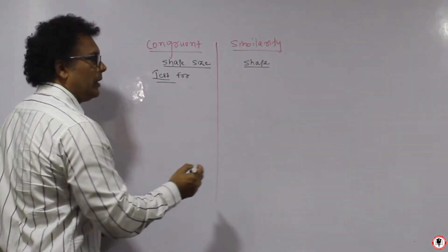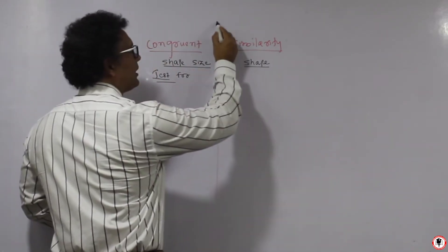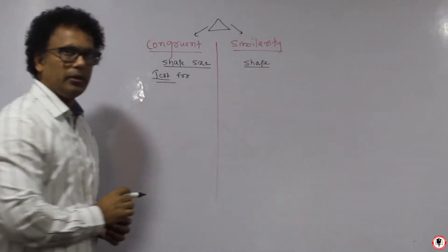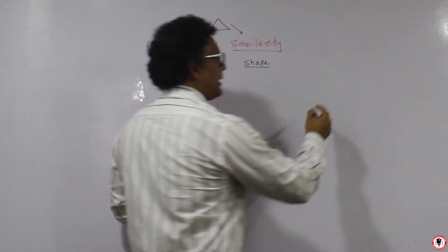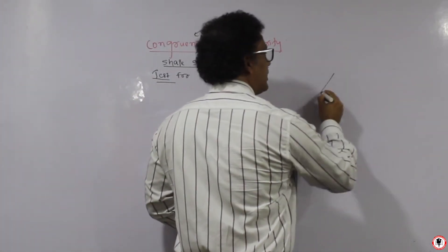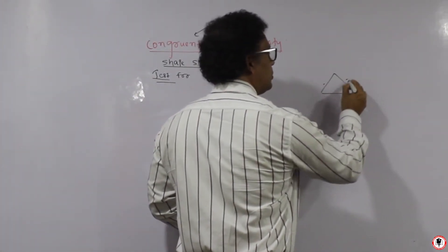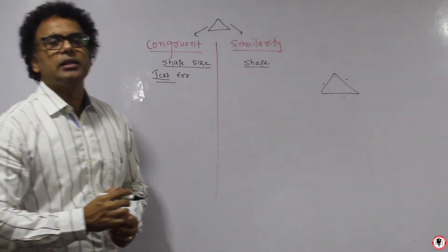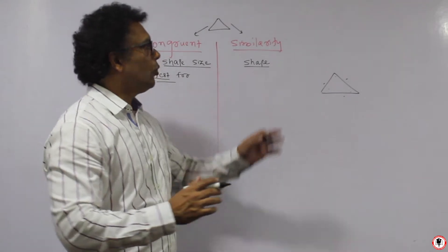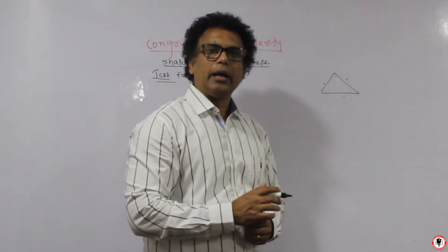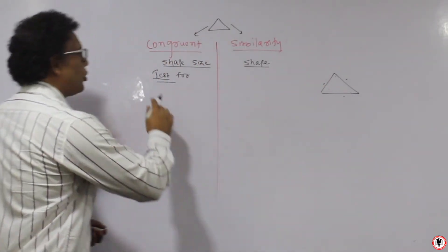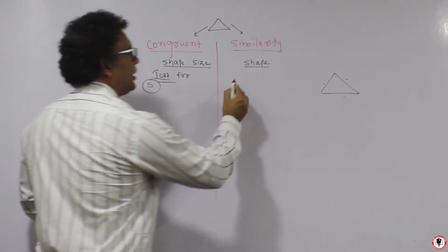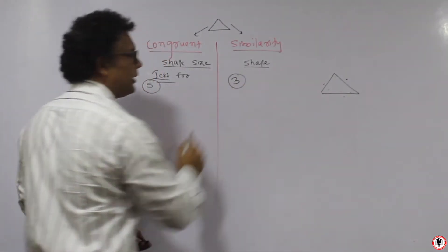We will have tests here. We are working with triangles — that is, triangles are congruent or triangles are similar. In a triangle there are three sides and three angles. To say two triangles are similar, we do not have to go with all sides or all angles. For congruence, you have five tests, and for similarity, you have three tests.